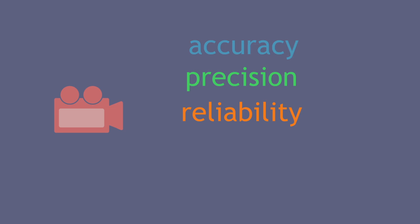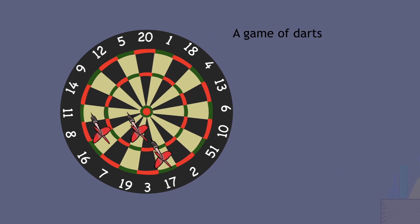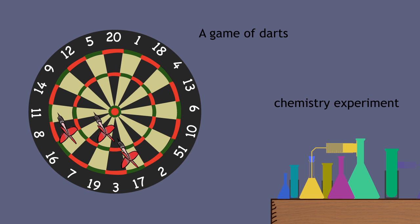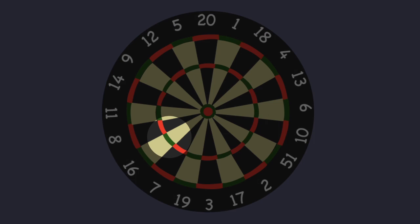Let's consider these by taking part in a game of darts whilst doing a chemistry experiment. In a game of darts you want to aim for the centre of the dartboard, called the bullseye.